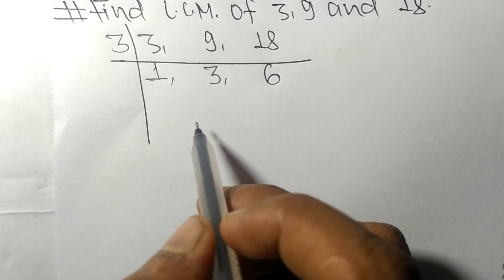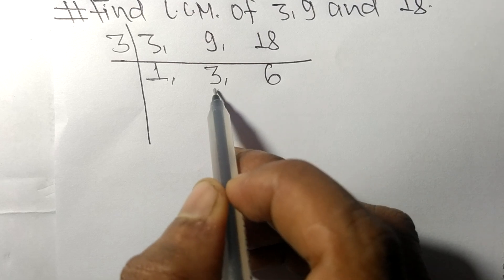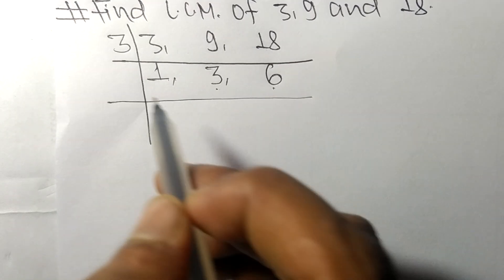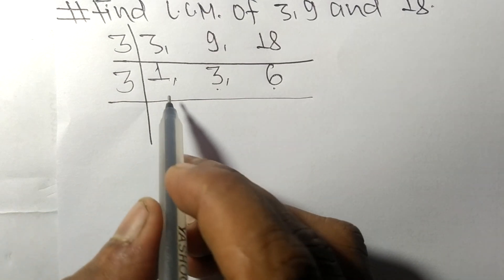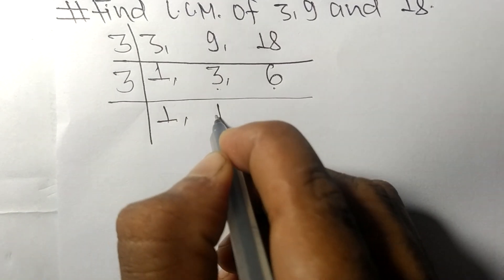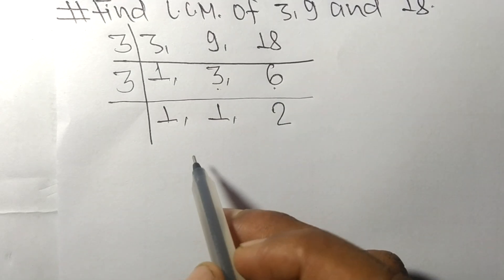So now we got 1, 3, and 6. Among them, 3 and 6 are exactly divisible by 3. 1 is not divisible, so it stays the same. 3 times 1 means 3, 3 times 2 means 6.